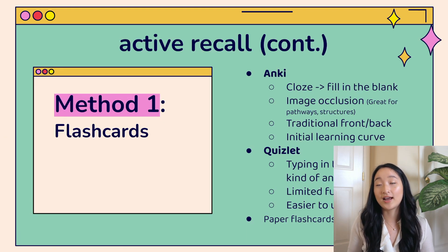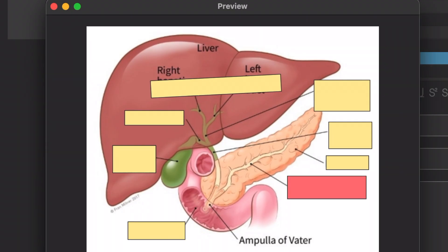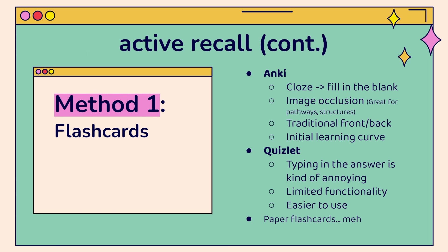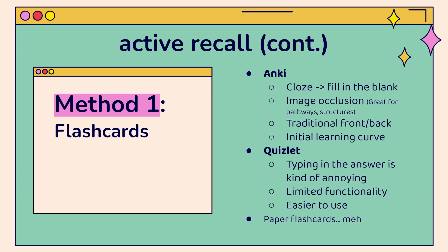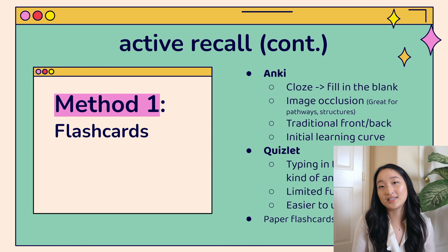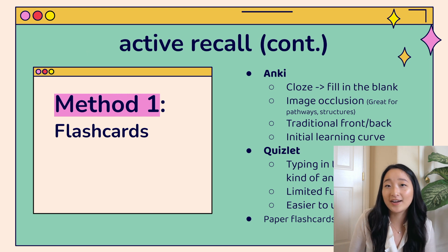The most common flashcard applications are Anki and Quizlet. With Anki, there's a cloze function, which is essentially fill-in-the-blank. You can also use it as a traditional front-and-back flashcard. I really like the image occlusion function, which lets you cover up a structure or part of a pathway and then reveal the answer. Meanwhile, Quizlet is simple and intuitive to use, but it's kind of annoying to always type in the answer. Ultimately, use whatever works for you — Anki has a bigger learning curve but a better payoff. Paper flashcards aren't my preference. If you feel you need to draw structures by hand, that's a sign flashcards may not be the best method for that topic. For example, for hormone pathways, a concept map or flow diagram might work better, though image occlusion in Anki would still work.